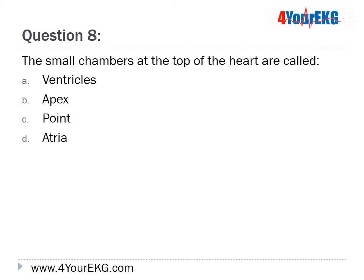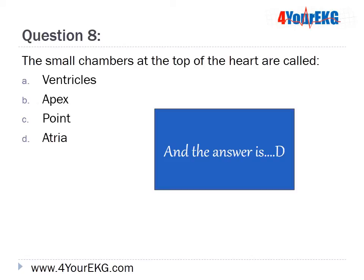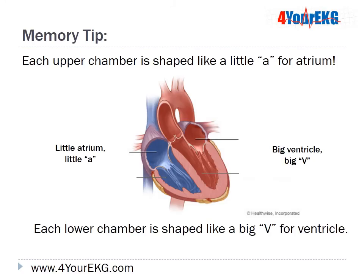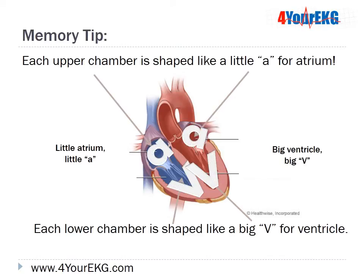Question 8: The small chambers at the top of the heart are called — A. Ventricles, B. Apex, C. Point, or D. Atria. The answer is D — Atria. Each upper chamber is shaped like a little 'a' for atrium, and each lower chamber is shaped like a big 'V' for ventricle.